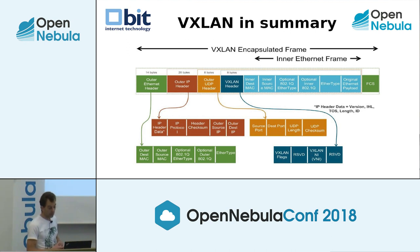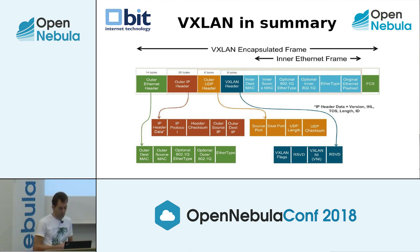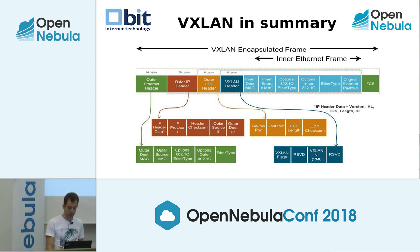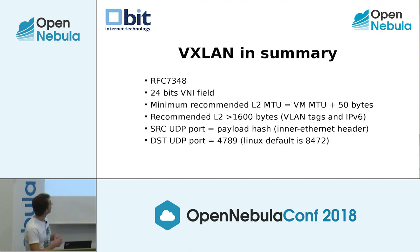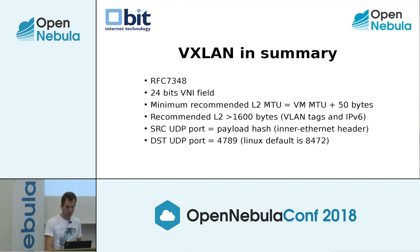A short summary about VXLAN: you take an Ethernet frame and add 50 bytes of VXLAN overhead - a header with a VXLAN ID, similar to a VLAN ID. It has some outer destination and a source port so it knows where to forward VXLAN packets. VXLAN has its own RFC, a 24-bit VNI field giving you up to 16 million virtual networks, which should be enough for most networks. Recommended layer two MTU is more than 1600 bytes, especially if you plan to use VLAN tags and IPv6. It uses UDP with a hash over the payload of the inner Ethernet frame.